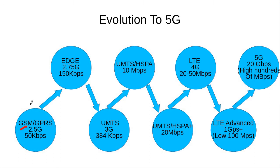When GPRS technology was added to the GSM system it was called 2.5G, and a user experienced a data rate of 50 kilobits per second in normal conditions. Then GPRS evolved into EDGE, known as 2.75G, and the user data rate increased to 150 kbps.